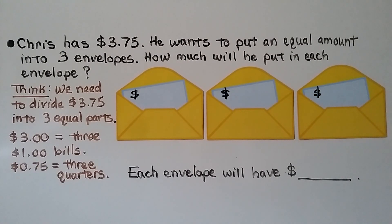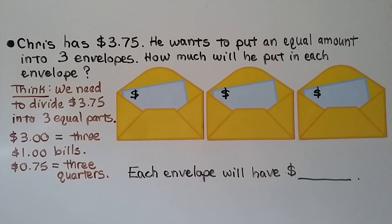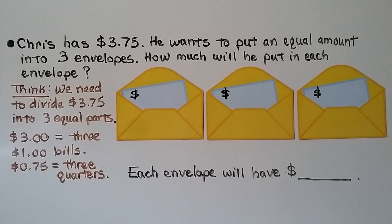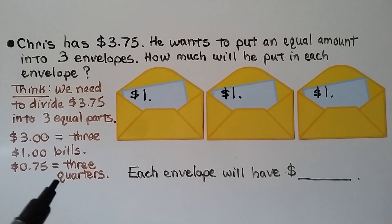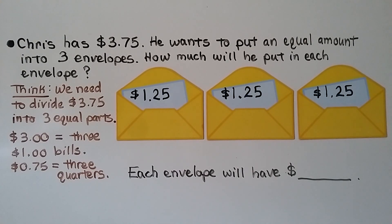Chris has three dollars and seventy-five cents and wants to put an equal amount into three envelopes. We need to divide $3.75 into three equal parts. Three dollars equals three one-dollar bills, so he puts one dollar bill in each envelope. Seventy-five cents equals three quarters, so he puts one quarter in each envelope. Each envelope will have one dollar and twenty-five cents.